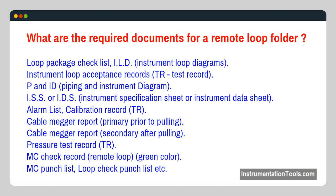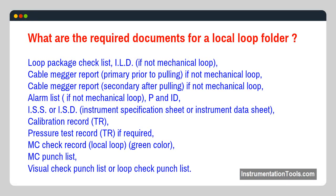What are the required documents for a local loop folder? Loop package checklist, ILD if not mechanical loop, cable mega report — primary (prior to pulling) if not mechanical loop — cable mega report — secondary (after pulling) if not mechanical loop — alarm list if not mechanical loop, P&ID, ISS or ISD (instrument specification sheet or instrument data sheet), calibration record TR, pressure test record TR if required, MC check record (local loop, green color), MC punch list, visual check punch list or loop check punch list.